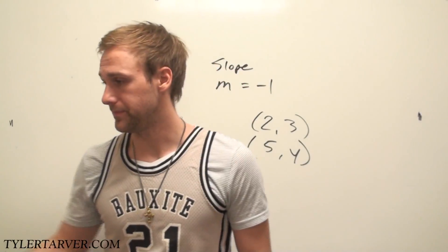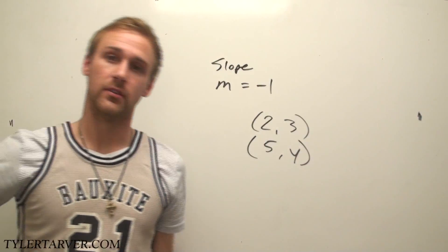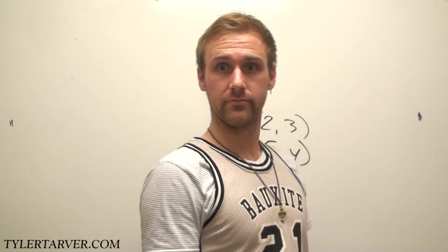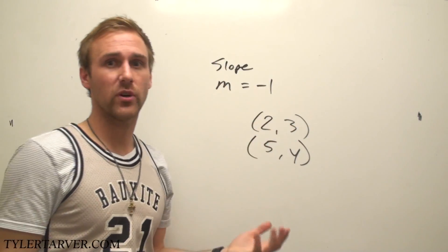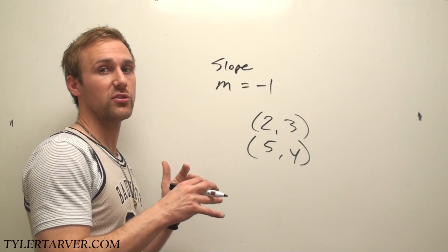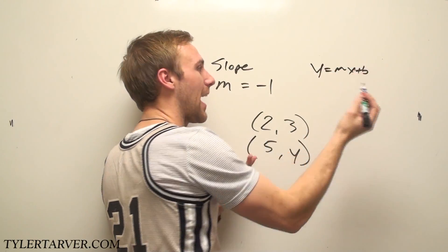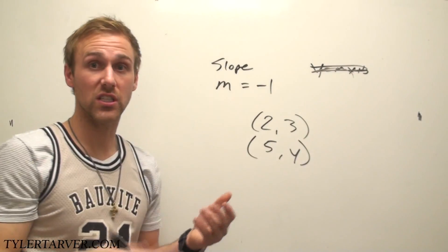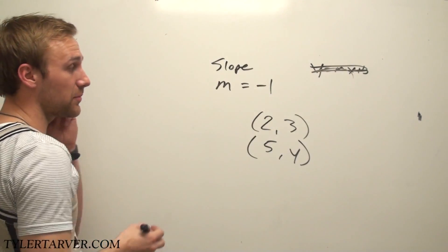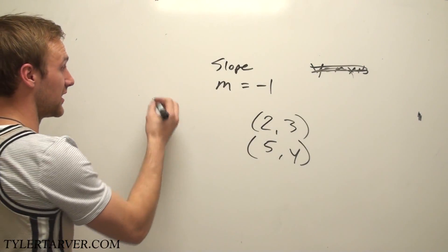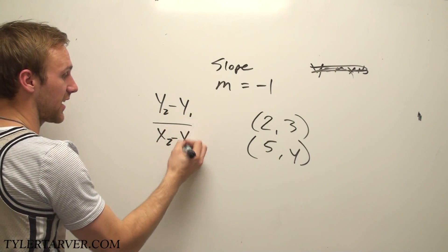Alright, let's work the problem. There are a couple of ways to work it. You could use the slope-intercept formula, which is y equals mx plus b, but I don't think that's necessary. I think we can just use the slope formula. The slope formula is y2 minus y1 over x2 minus x1.